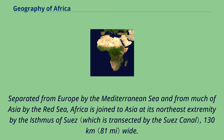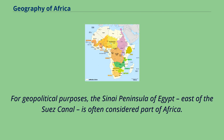Separated from Europe by the Mediterranean Sea and from much of Asia by the Red Sea, Africa is joined to Asia at its northeast extremity by the Isthmus of Suez, 130 kilometers wide. For geopolitical purposes, the Sinai Peninsula of Egypt, east of the Suez Canal, is often considered part of Africa.